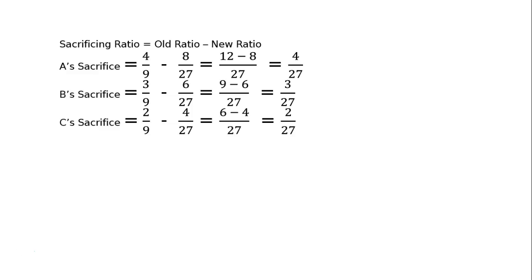C's sacrifice, 2 upon 9, old share minus new share is 4 upon 27. That is LCM 27, 9 times 3 are 27, 3 times 2 are 6 minus 4 upon 27, that is equal to 2 upon 27.